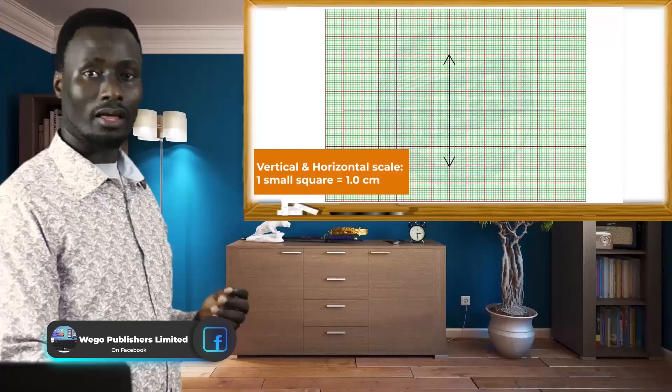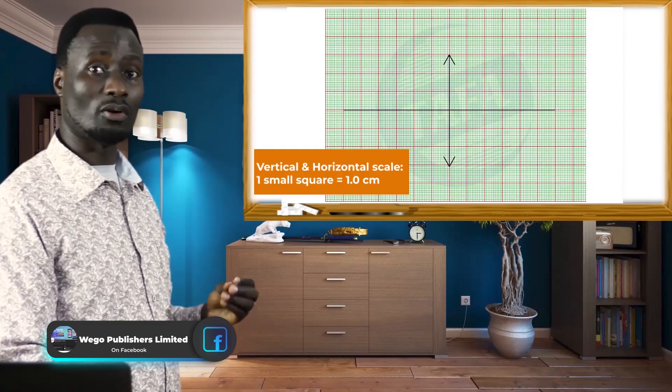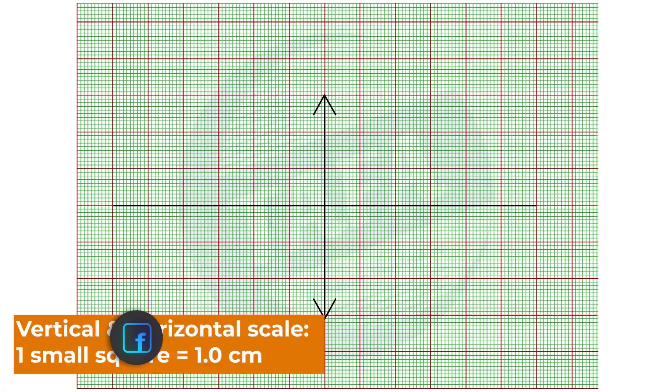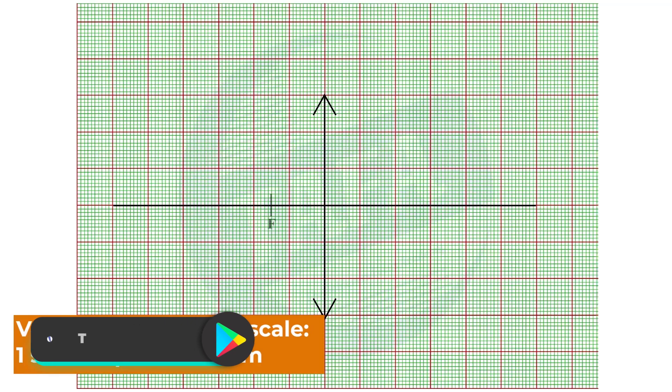Then the principal focus will be 15 small squares from the lens on either side.